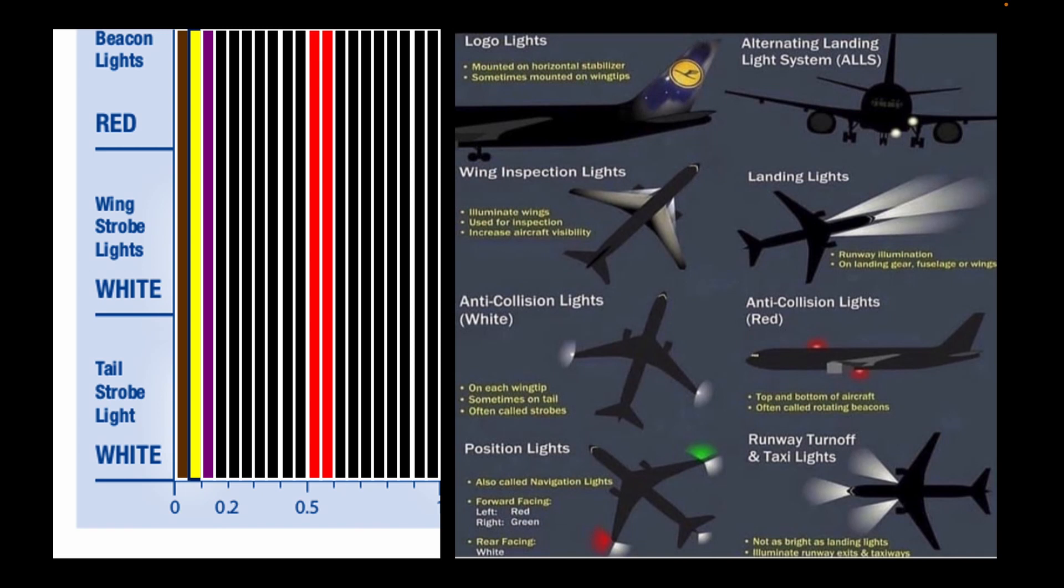Airplanes have 8 types of lights: logo, wing inspection, anti-collision lights, position or navigation lights, alternating landing light system.